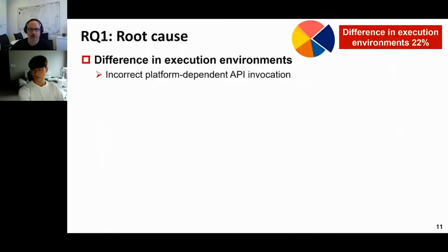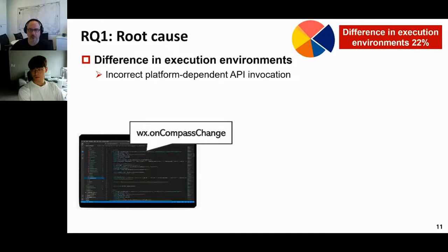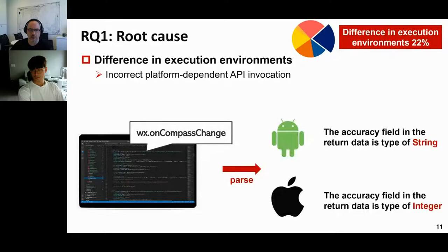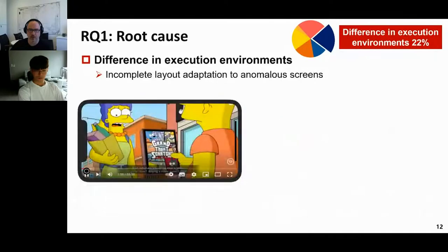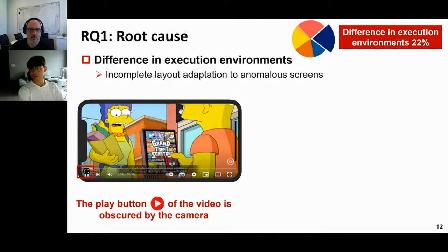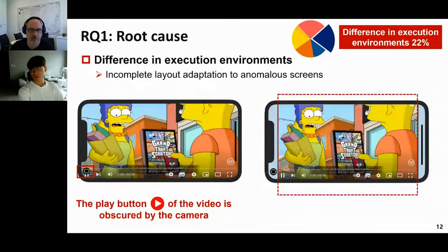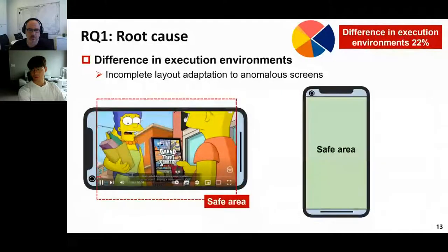Let's look at an example: some APIs in WeChat mini-programs are platform-dependent. For example, the API wx.oncompasschange gets different return values on Android and iOS devices, so developers must handle them properly. Another case is caused by incomplete layout adaptation to notched screens — as mobile phones now have more components such as cameras, top notches, and bottom bars, rendering on restricted areas causes inconvenience. For instance, the play button of a video can be obscured by the camera. Developers need to adjust their layout code according to the target device, in what we call the safe area (SIP area).